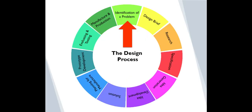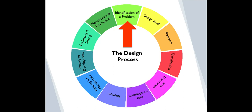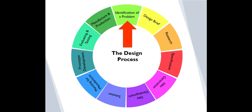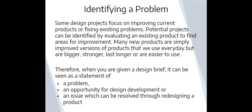This diagram shows the design process cycle. As you can see, it's in the shape of a circle, which shows that the process of designing products is a continuous one — once complete, you can start the process again. It also allows the designer to go back a step if needed, so the design process is flexible and not restrictive. The first stage is identifying a problem; some design projects focus on improving current products or fixing existing problems, and potential projects can be identified by evaluating an existing product to find areas for improvement.